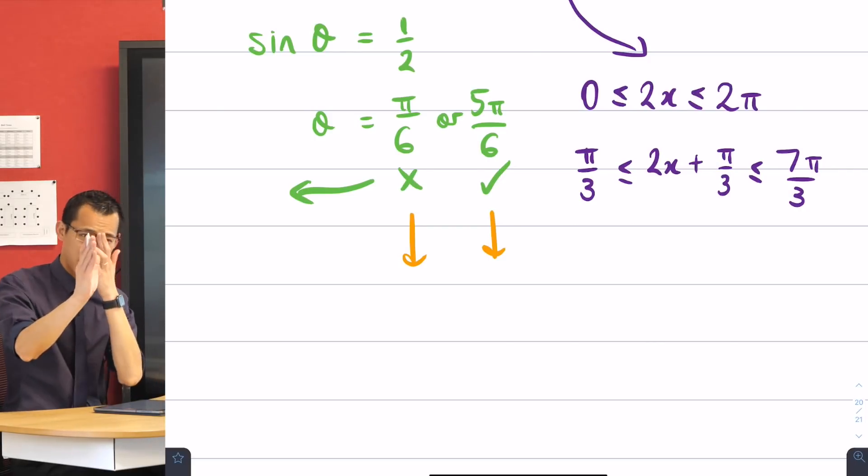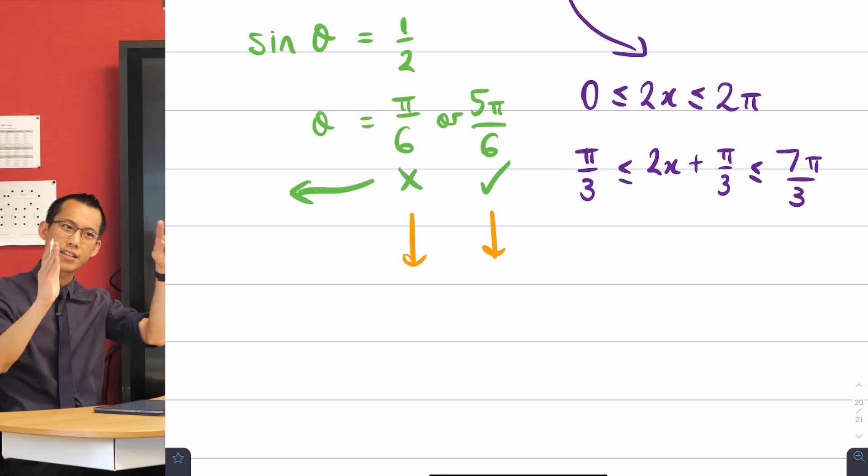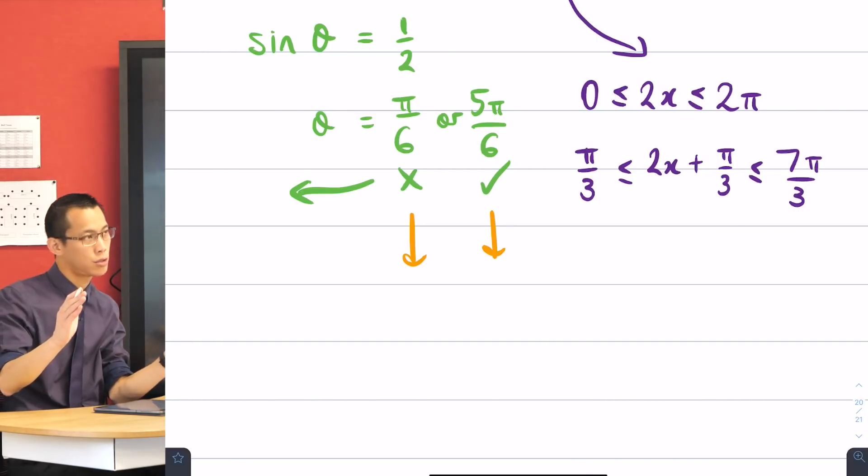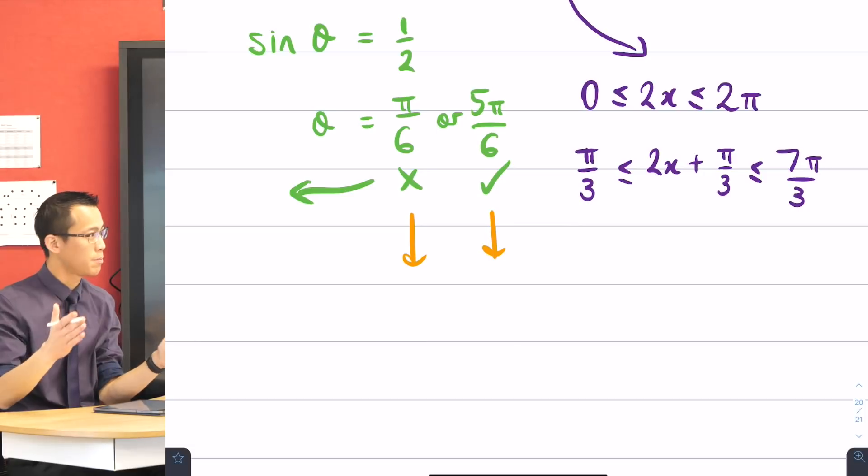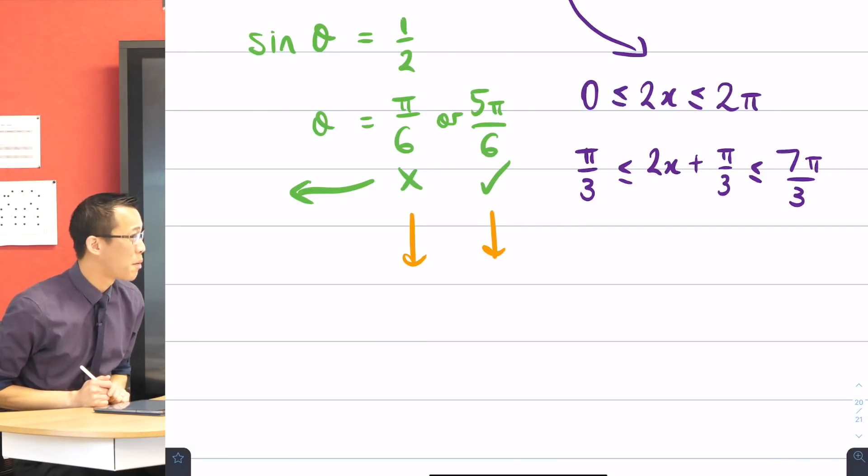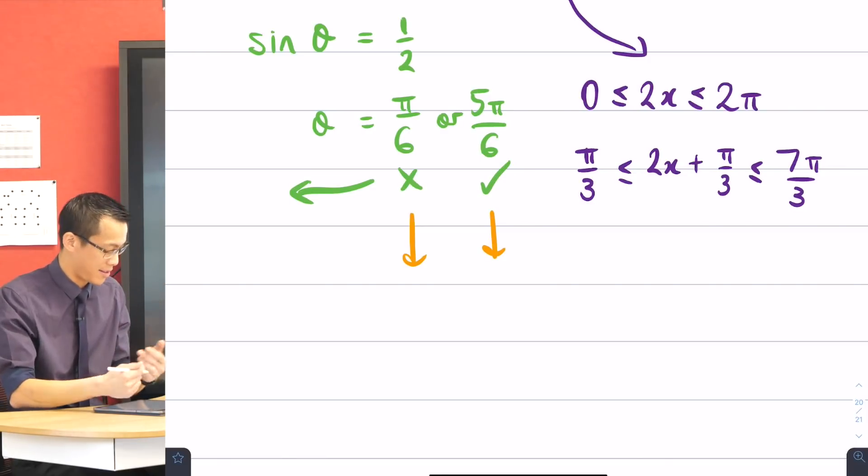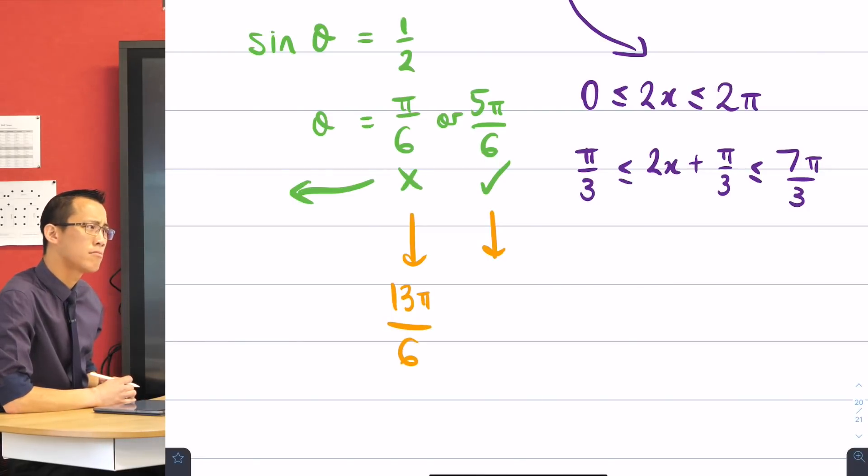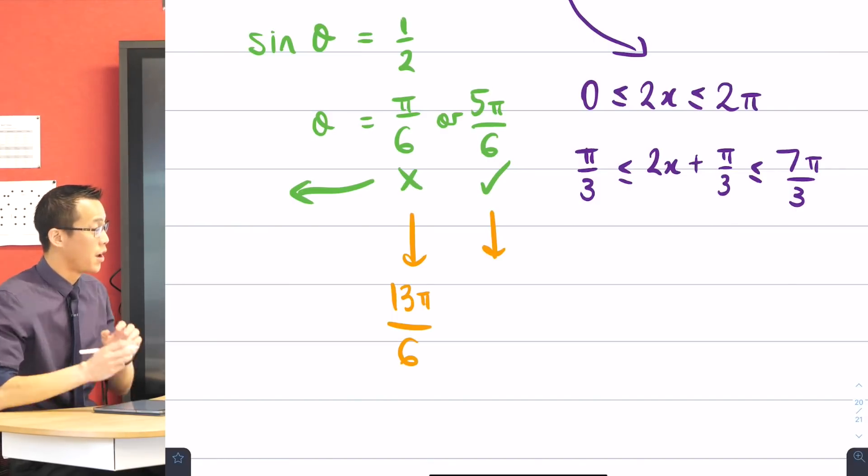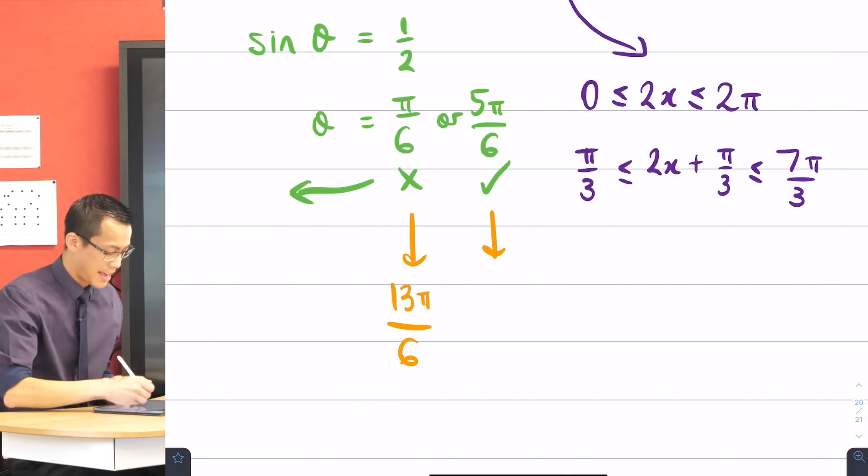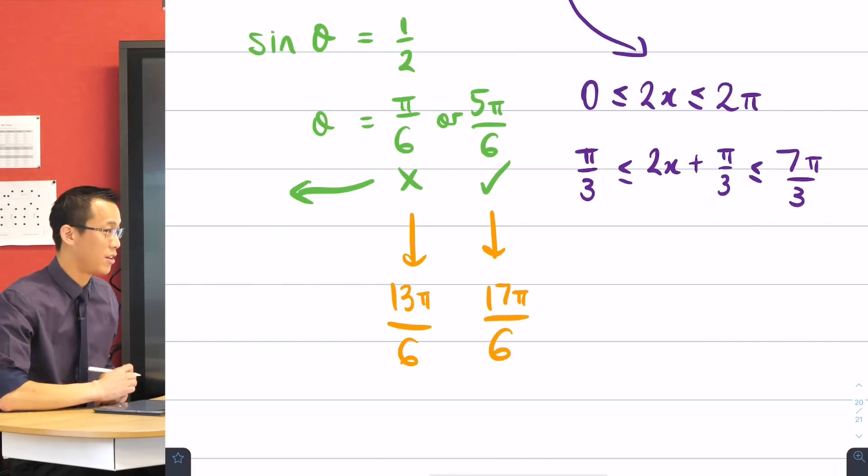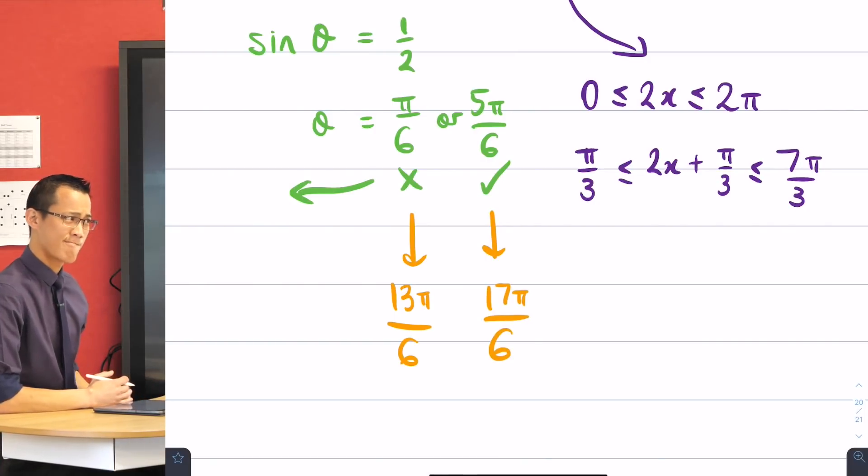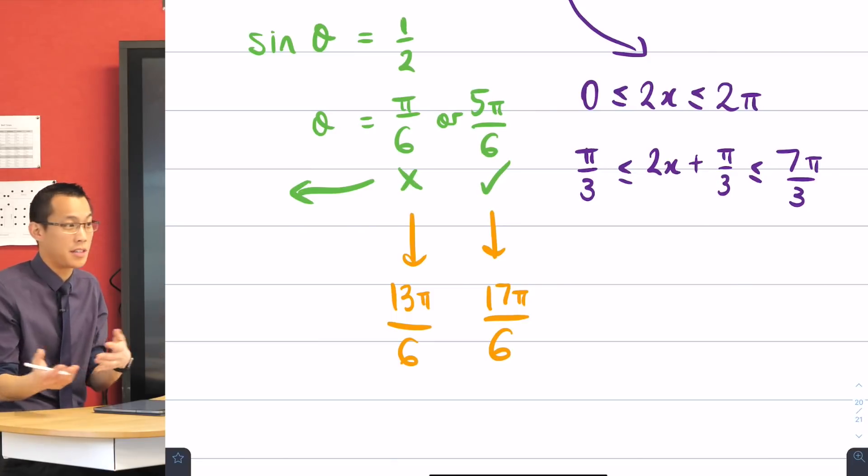So if π on 6 is a solution, there's another one just like it, 2π radians later. 2π is 12π on 6. Do you agree with that? So I'm going to add 12π on 6 to this solution which gives me that. Is that okay? That's 12π on 6 later. You'll get another one for the other solution too. 12π on 6 later. It's going to give you 17π on 6. Is that okay? So I'm getting more solutions. I could keep going if I wanted. So there's an infinite number of these.